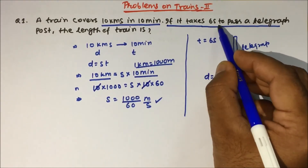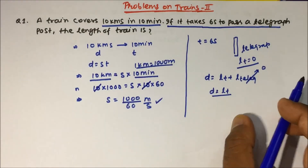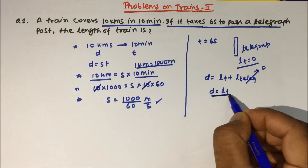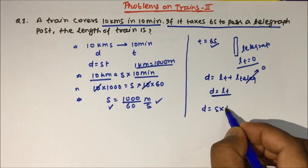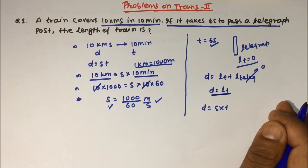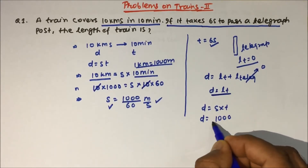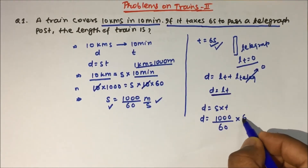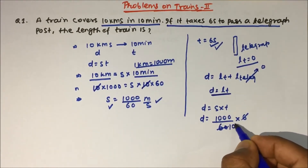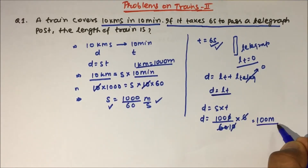If it takes 6 seconds to pass a telegraph post, then the length of the train is: d = s × t, where s = 1000/60 and t = 6 seconds. The 10s cancel, giving distance — which is the length of the train — equal to 100 meters.